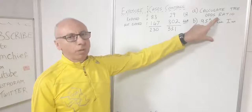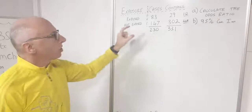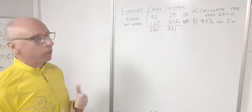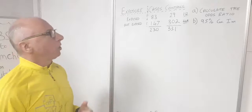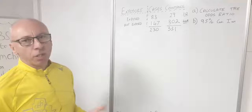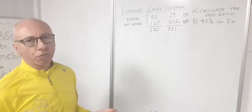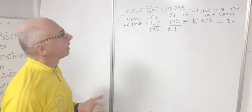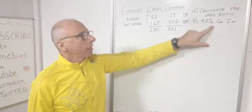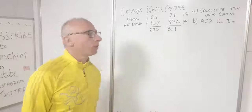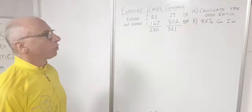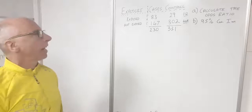The odds ratio tells us that this is just a sample of the population, not the whole population. If you want to use the whole population, there are other calculations such as relative risk. In this video we're going to calculate the odds ratio and then a 95% confidence interval to see how valid our odds ratio is, and draw a conclusion at the end.